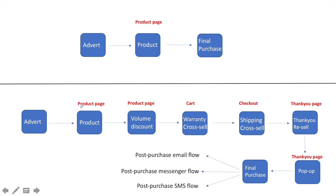By following the steps in this video, here's how the funnel works: ad → product page → volume discount incentivizes buying more than one unit → cart cross-sell with the $10 warranty → checkout with tiered shipping and the warranty bundle if not previously purchased → thank you page reorder offer → pop-up with 30% off to bring them back to the store. Each step squeezes additional clean profit from the customer.